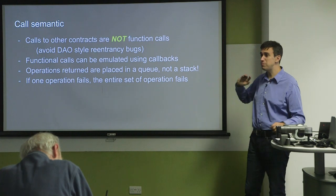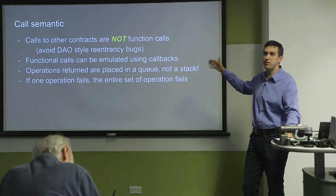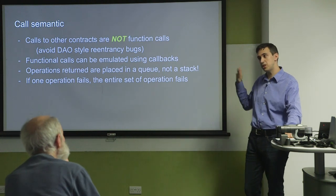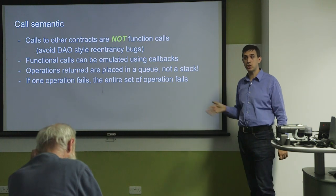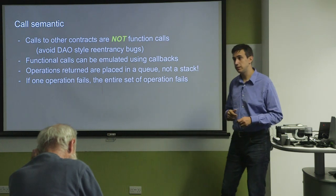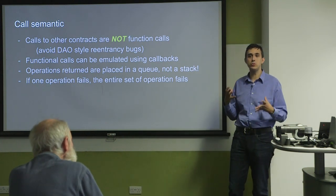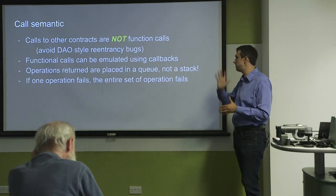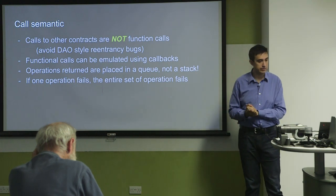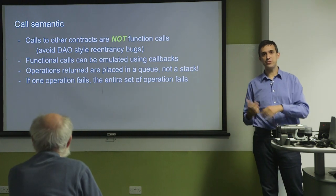If one operation fails, the entire thing currently fails, so you can rely on atomicity of execution. Function calls can be emulated using callbacks — continuation-passing style — where your message to another contract says: I computed something but I'm not completely done; here's some information, please call me back with what I need. It's more cumbersome but less common than you might think. This model is also very close to what you'd want for sharding: if you already have this asynchronous calling convention, you're in good shape to extend to a multi-shard paradigm.